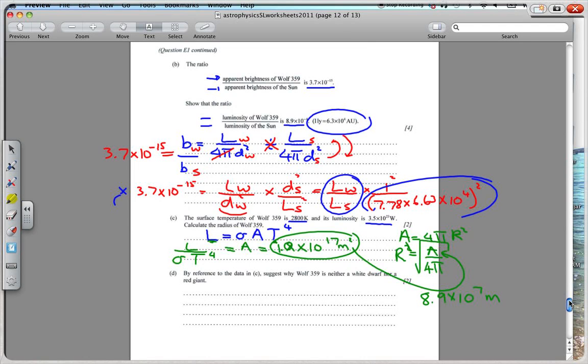And then by reference to the data, suggest why Wolf 359 star is neither a white dwarf nor a red giant. Now the idea with a white dwarf, that's giving an indication of the color. This 2800 is actually red, going into the red area. So the color is wrong. This is a much hotter star. So white dwarf, it can't be a white dwarf because it's not hot enough. It's too cool. The temperature is too low.